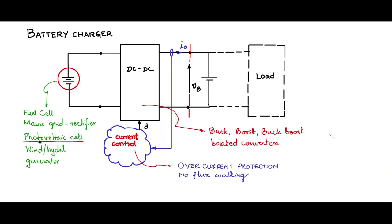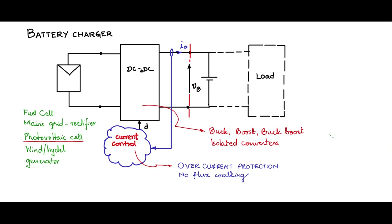Let me consider a photovoltaic cell as the source because rooftop solar PV cells are becoming more and more popular, and many applications related to photovoltaic cells involve charging batteries. I will replace the generic source with a photovoltaic cell. The PV module or PV array is interfaced with a buck converter to charge the battery. We will be sensing the output current, which will be the inductor current, and using that to control the current of the inductor.